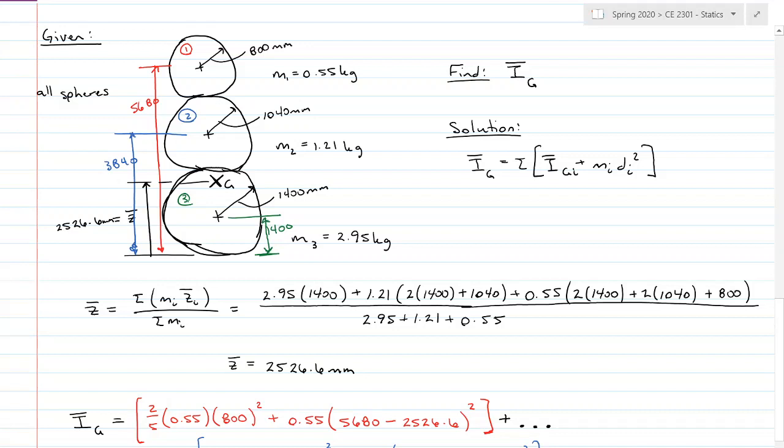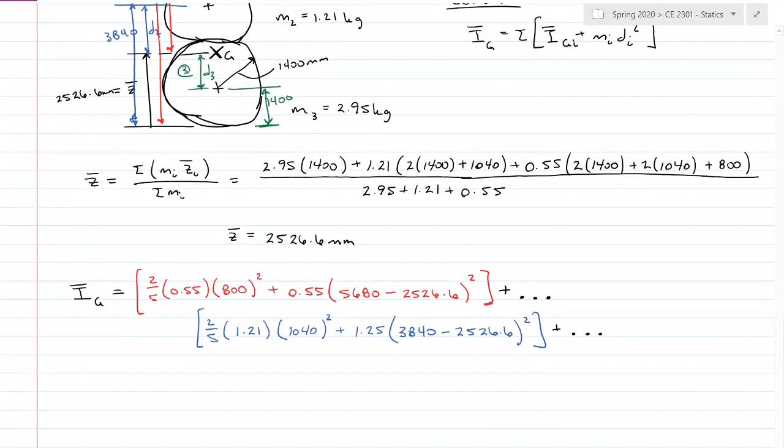It's my habit to measure everything from the same datum. So then we have this little bit here, which is distance one, and then this bit here, which is distance two, and this bit here, which is distance three. Does it matter if it's above or below the mass center? No, it doesn't, because we're squaring it. So sign convention doesn't matter because it gets squared anyway.